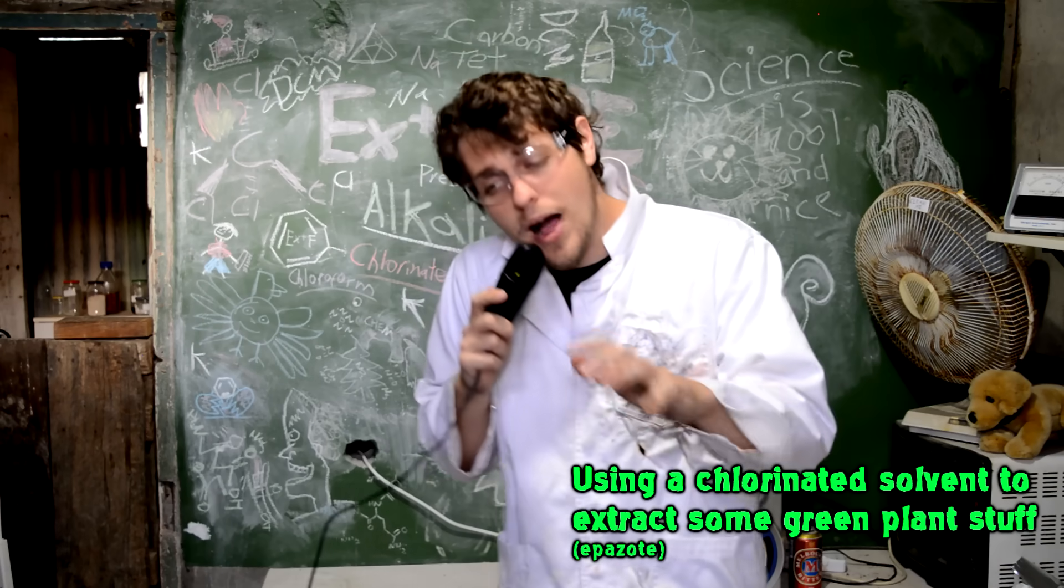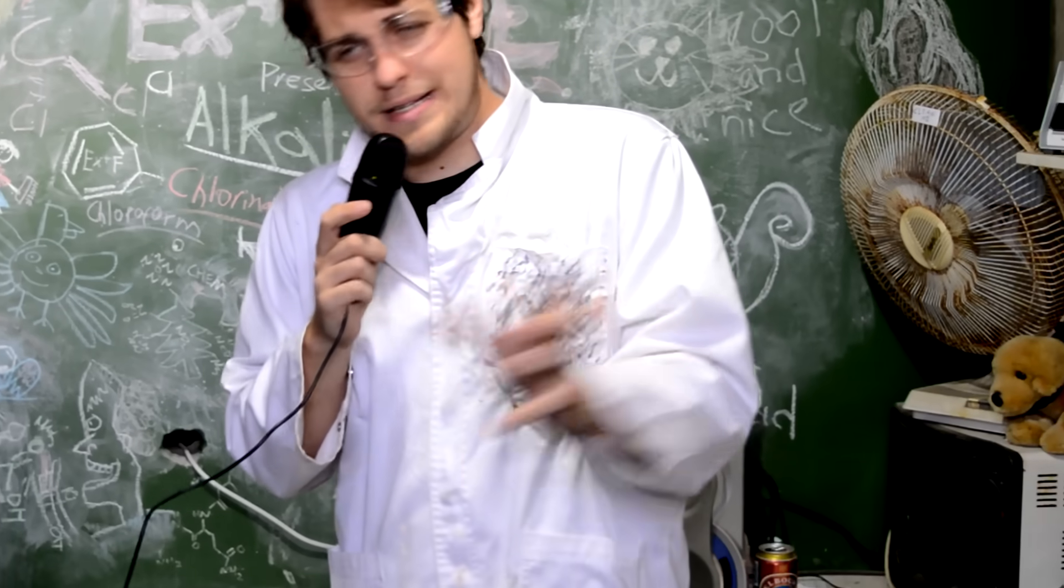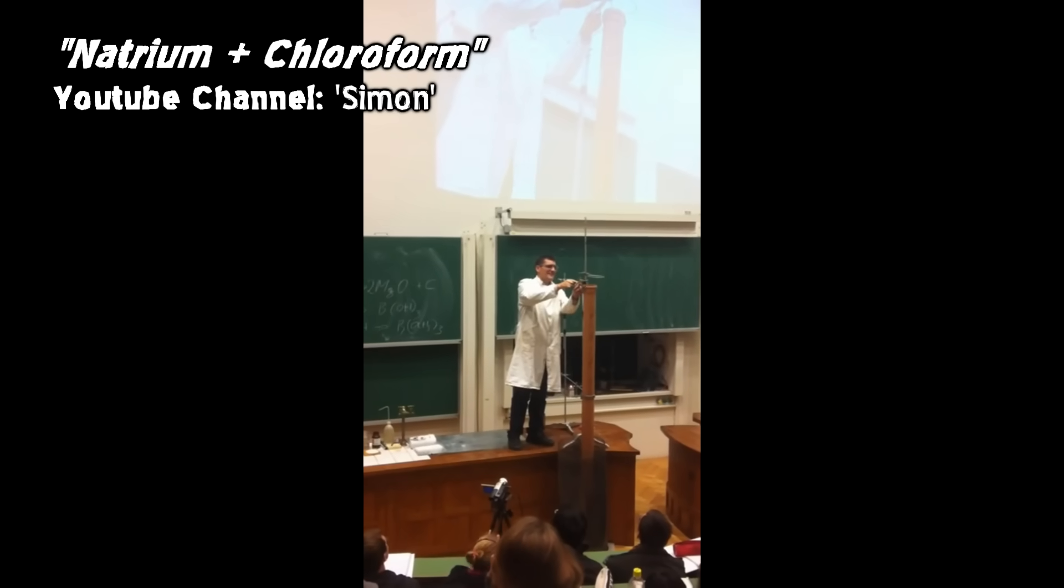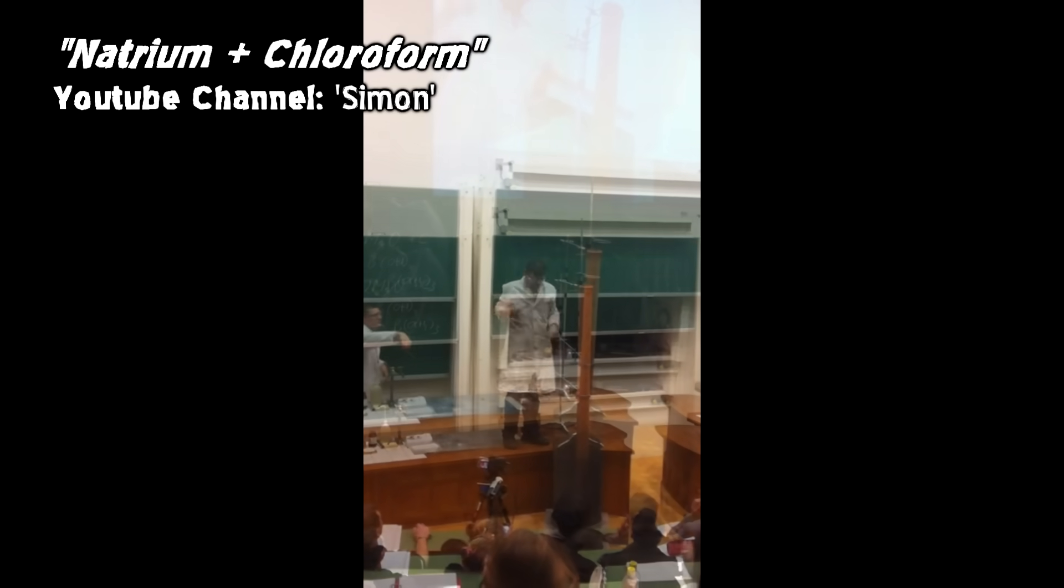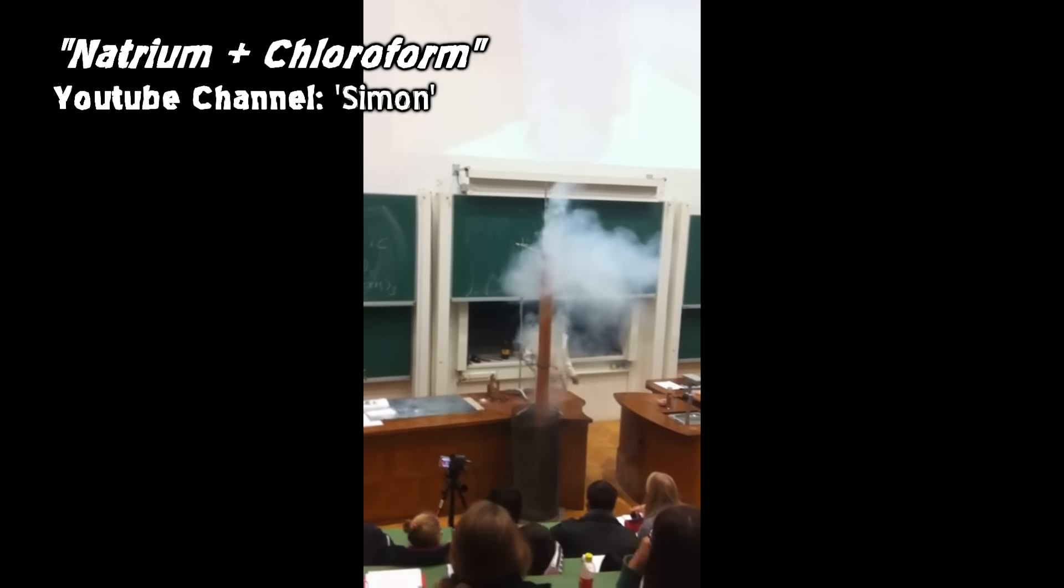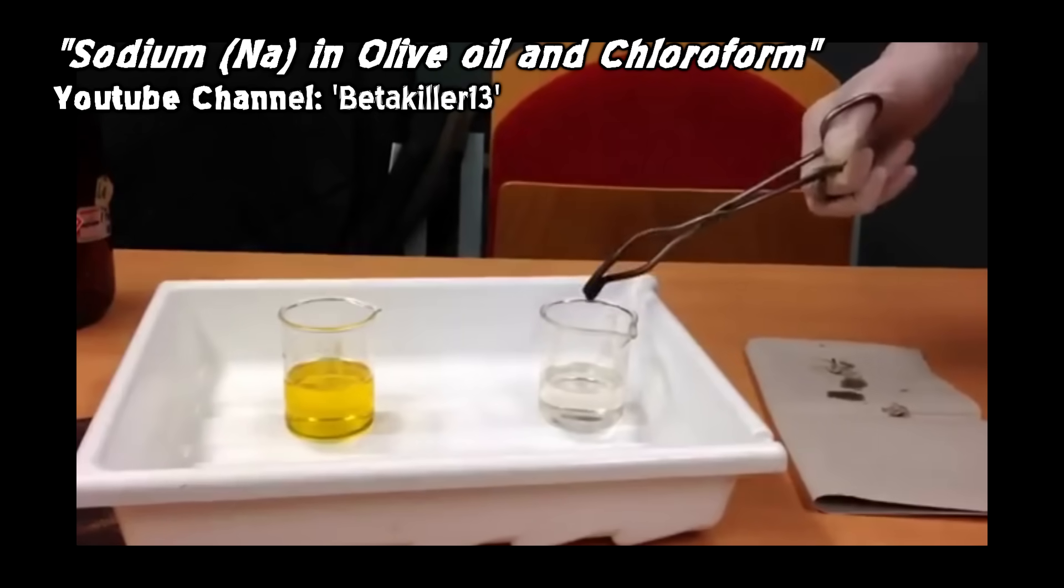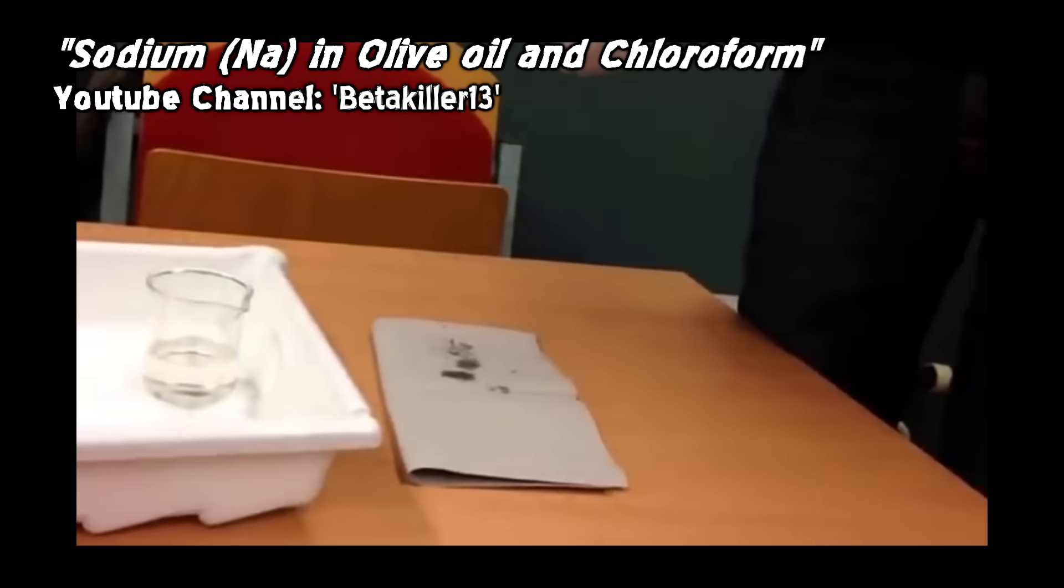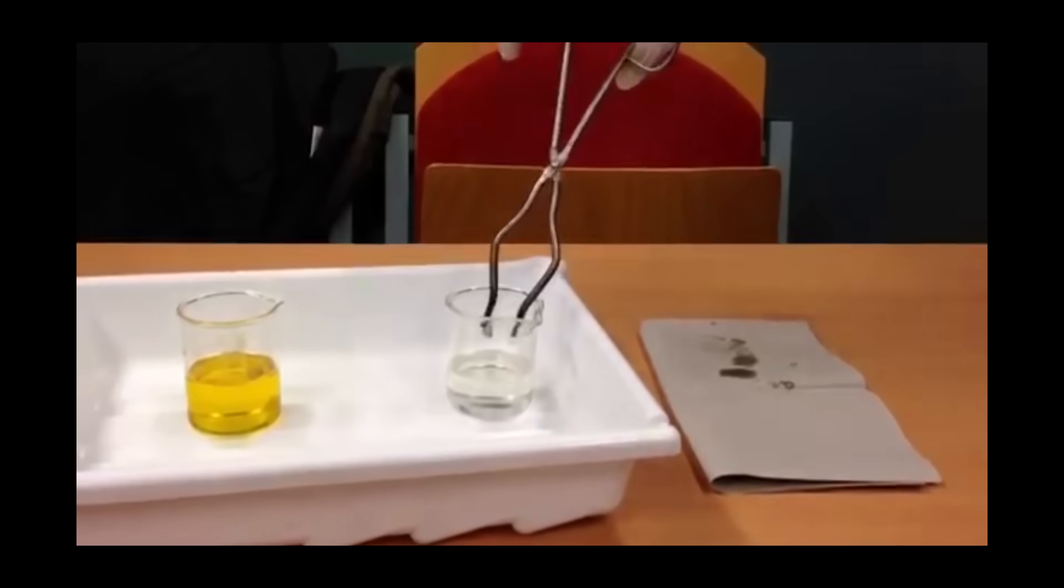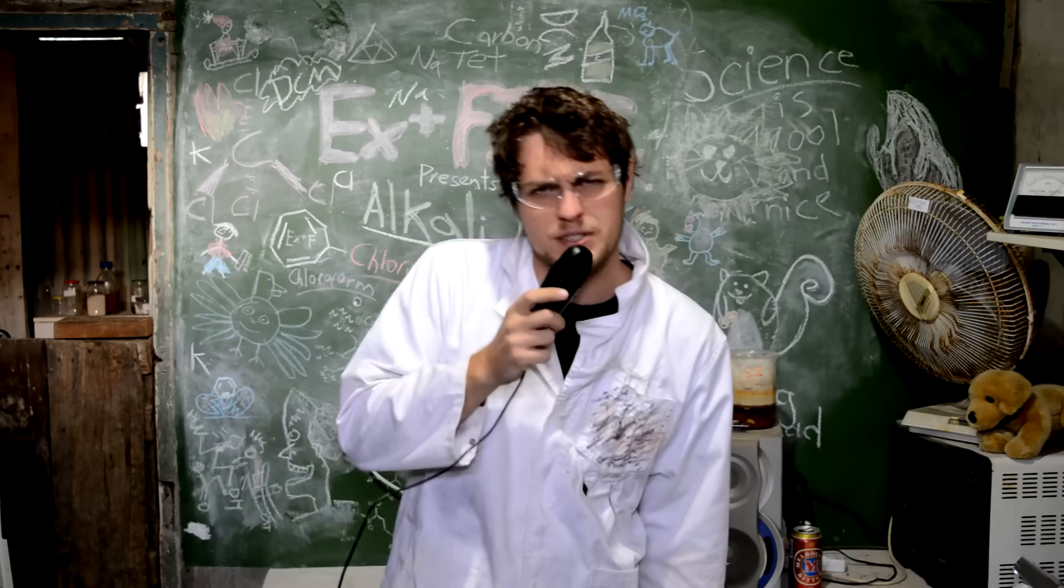To look at examples of what might actually happen, we can go to the font of all chemistry knowledge, YouTube, and look up all examples of alkali metals and chlorinated solvents. And we only come across two. One of which ends in a violent detonation. And one of which just sort of happens. So the question is, which one of these examples is correct? Was this guy split seconds away from disaster?